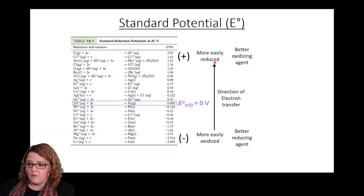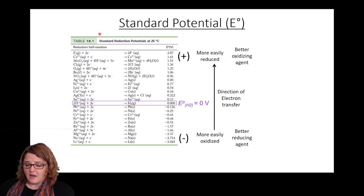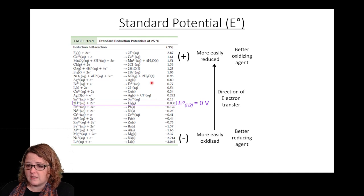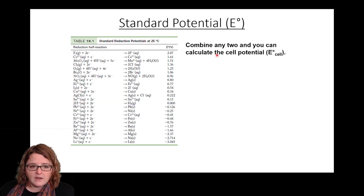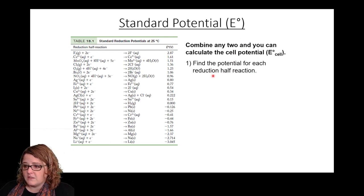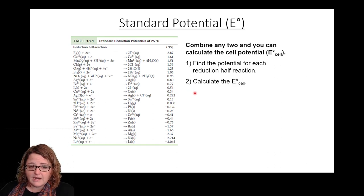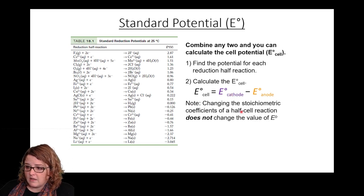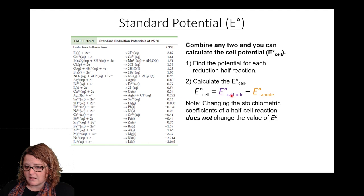You can combine any two half cells to calculate that cell potential. Find the potential for each reduction half reaction, then do cathode minus anode math to calculate the standard cell potential. An important aside: these are intensive parameters, so we don't need to account for the stoichiometry not being one-to-one. We're literally going to take these values and subtract one from the other.